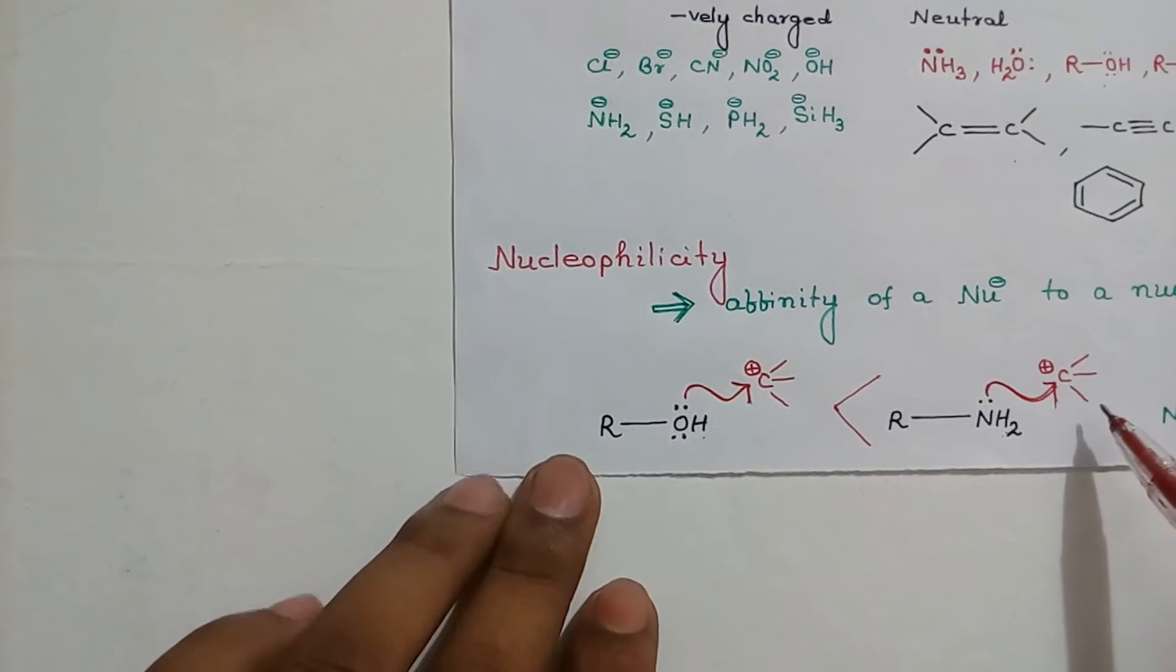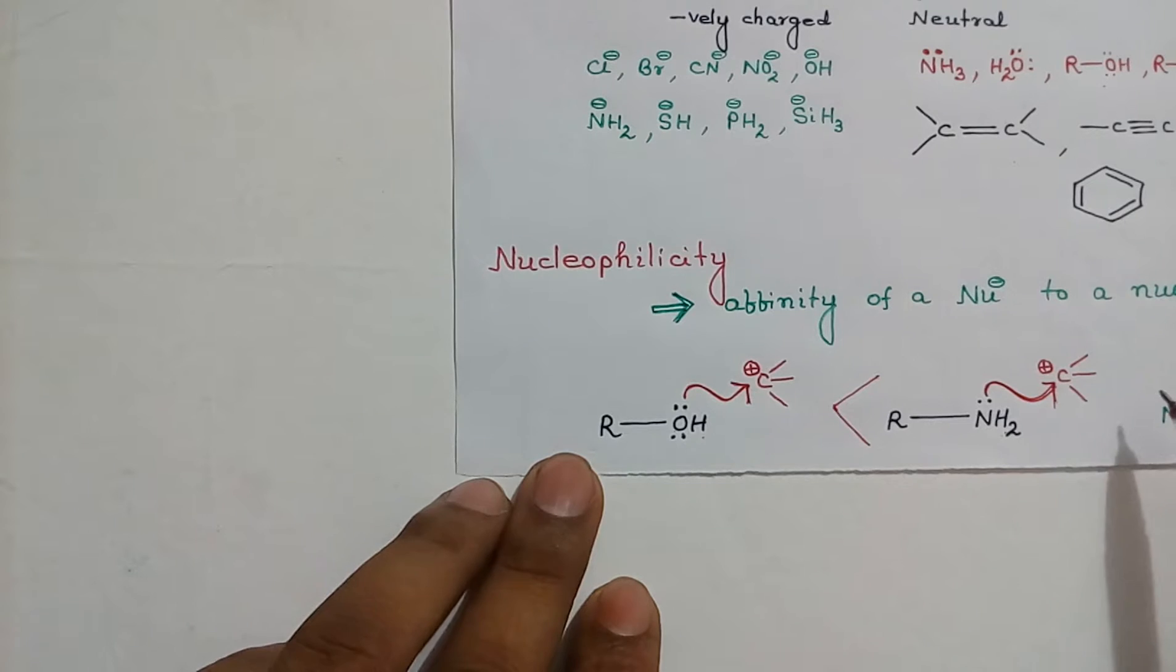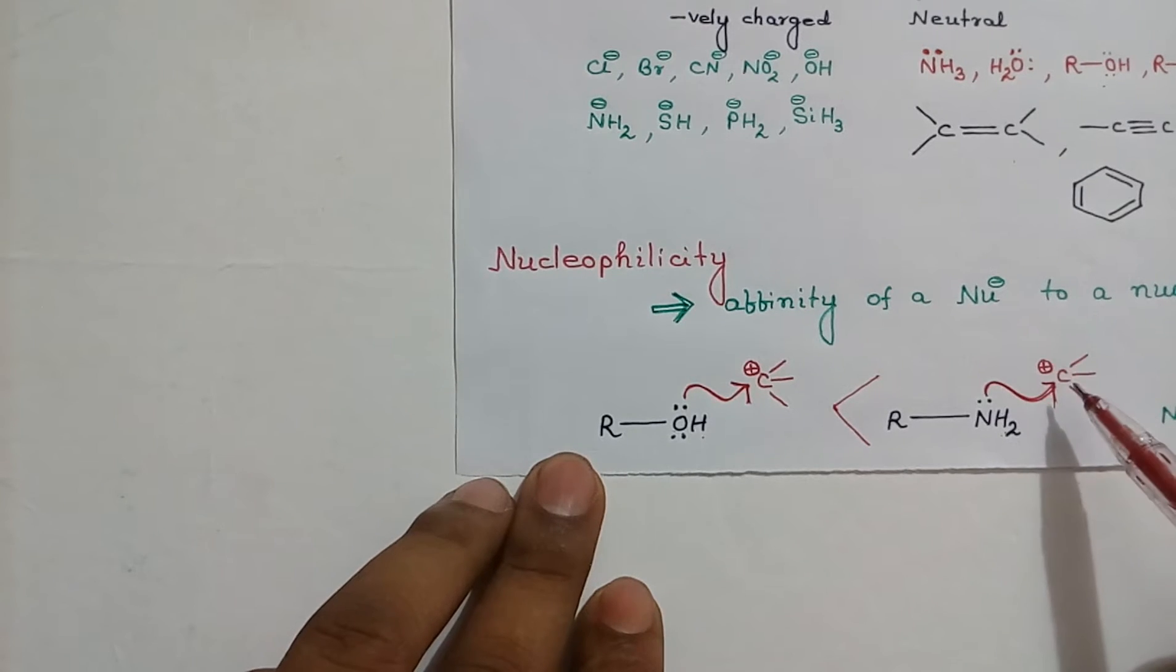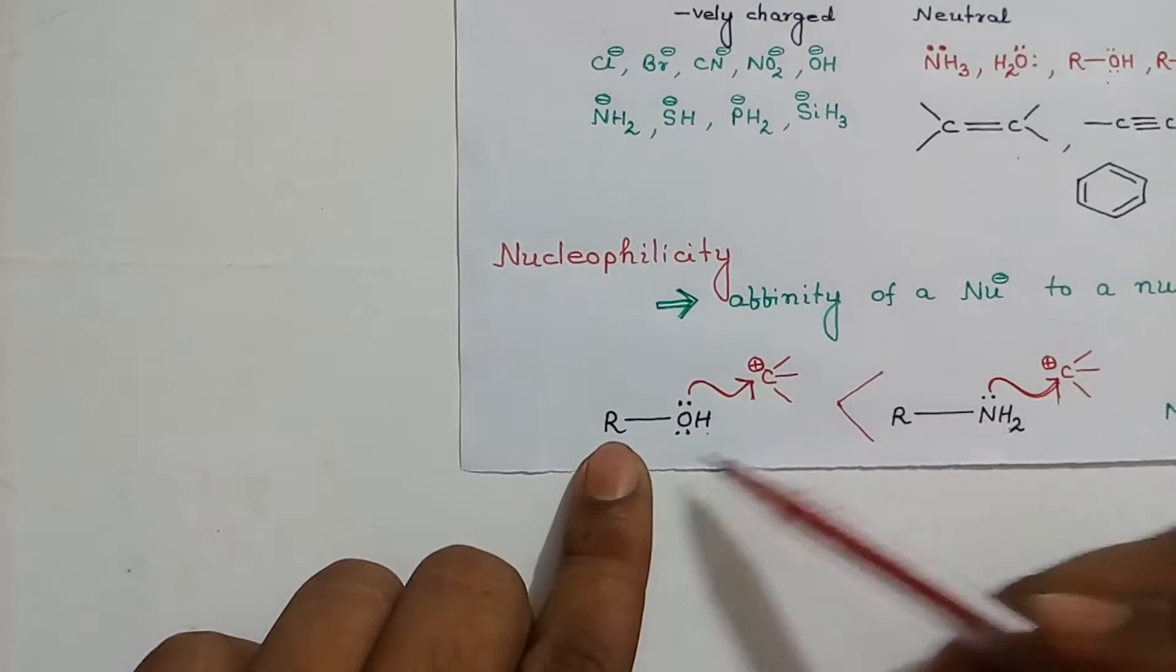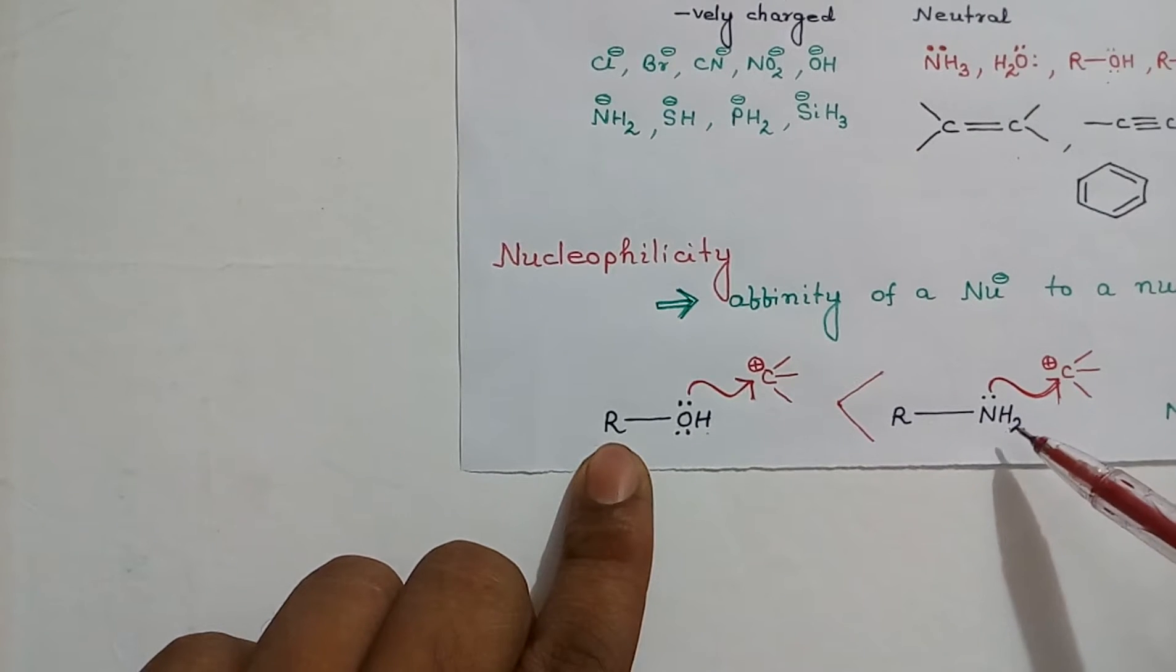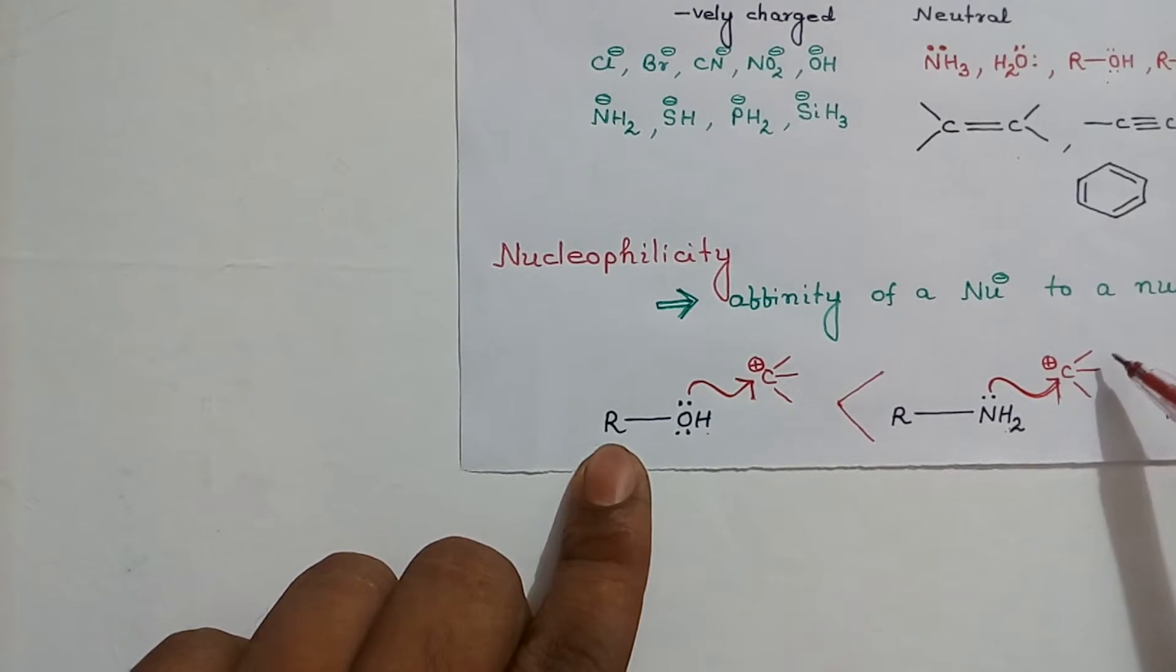This can be easily understood by considering the situation. Let's say one beggar is there and one rich man and one more stingy and less stingy people are there. Of course, less stingy people will donate to the beggar more readily.